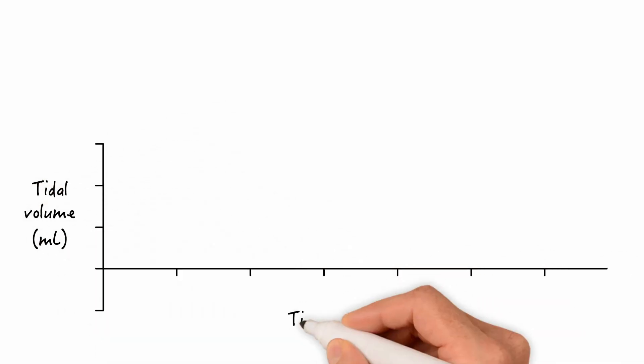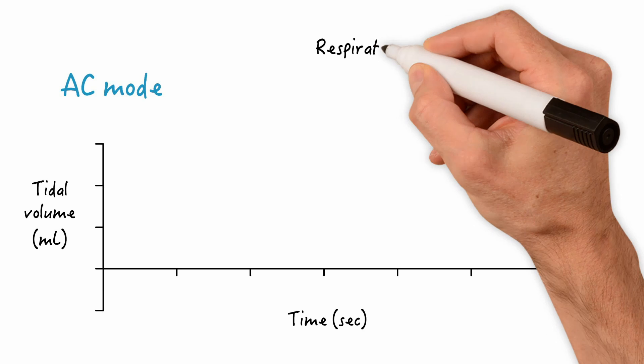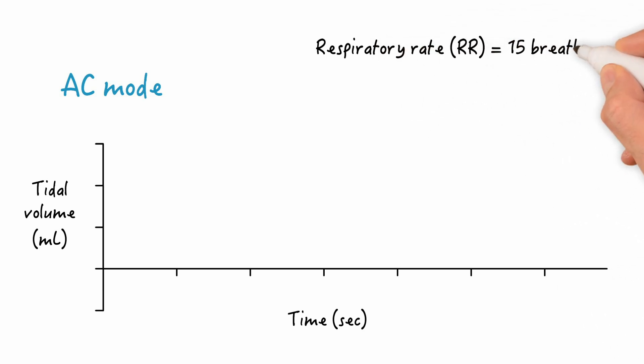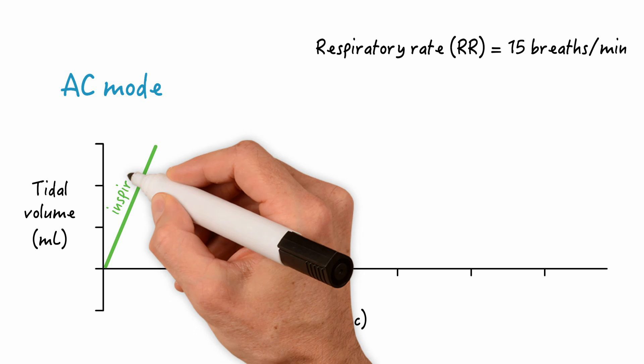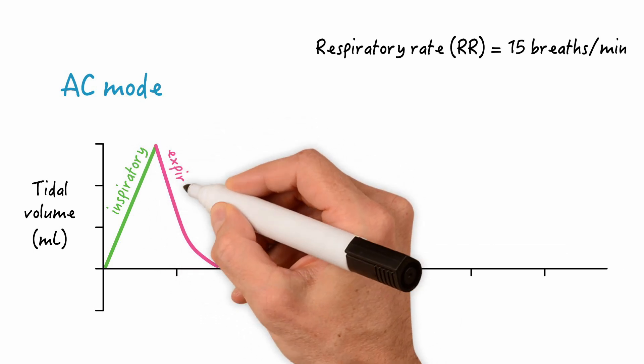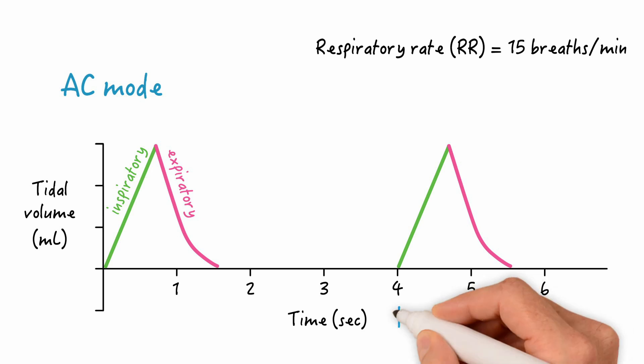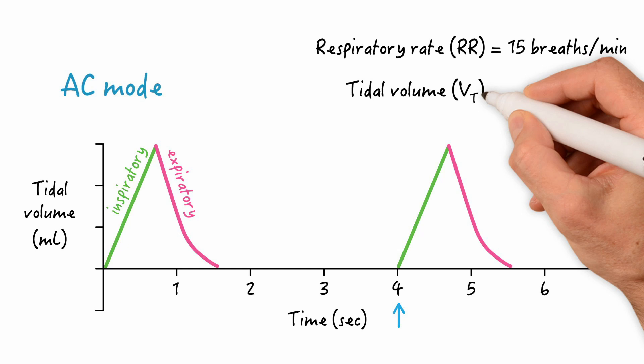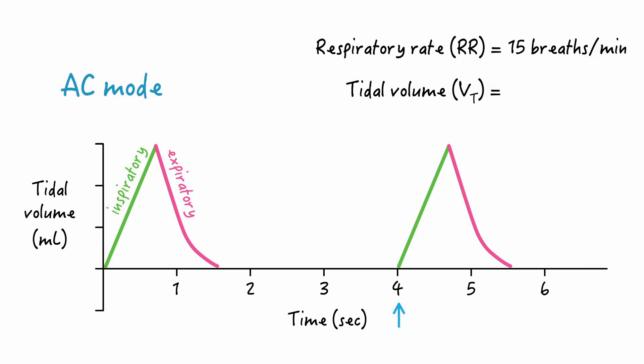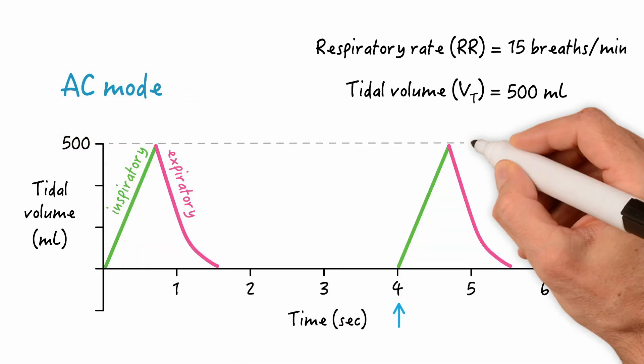Suppose we set our patient on the AC mode and we set the respiratory rate to a rate of 15 breaths per minute. That means that if you do 60 seconds divided by 15 breaths in a minute, the patient will receive a breath every 4 seconds. In this example, the patient is not attempting a breath, but every 4 seconds, a fixed volume will be delivered regardless. Here, we've set a mandatory volume of 500 milliliters. So every timed breath, there will be a volume of 500 milliliters being delivered.